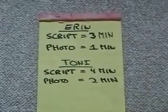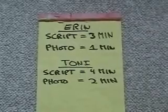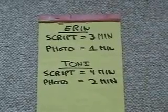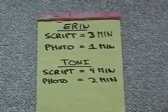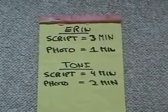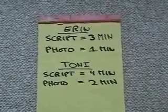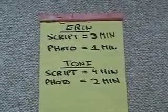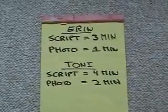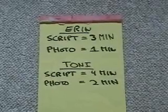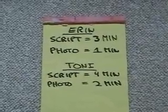Right away looking at these, we know who has absolute advantage. Aaron is faster with prescriptions — she's got absolute advantage there. She's also faster with photos, so she's got absolute advantage there too. These problems are a little different because we're talking about the amount of time.